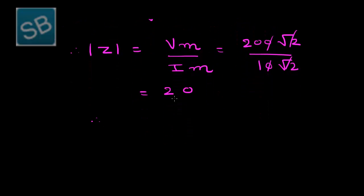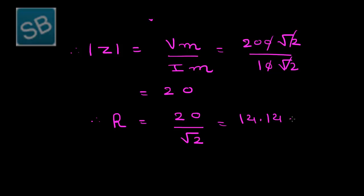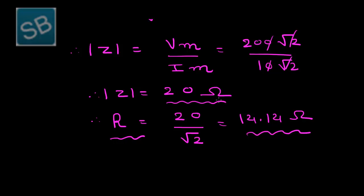Both impedance and resistance are obtained. The impedance |Z| is 20 ohm and the resistance R is 14.14 ohm. Don't forget to write the unit of impedance, which is ohm. With this, illustration 3 is complete.